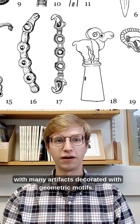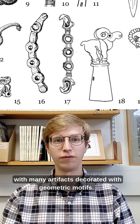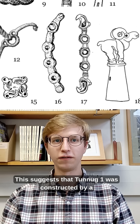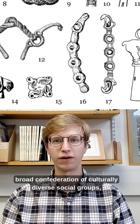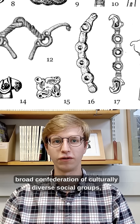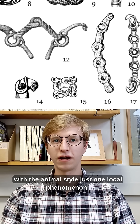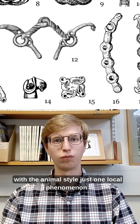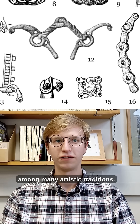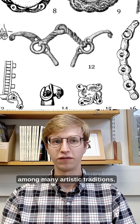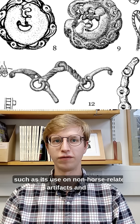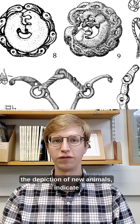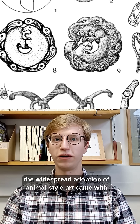Furthermore, not all of the art at the site was in the animal style — many artifacts were decorated with geometric motifs. This suggests that Tunagwan was constructed by a broad confederation of culturally diverse social groups, with the animal style just one local phenomenon among many artistic traditions.